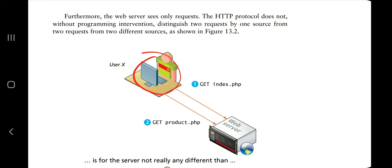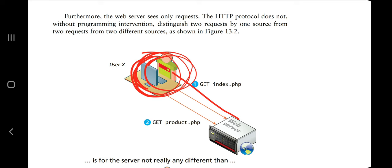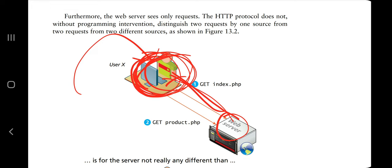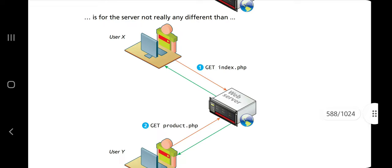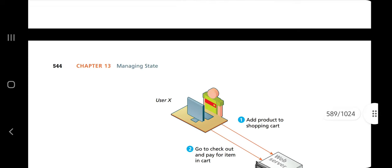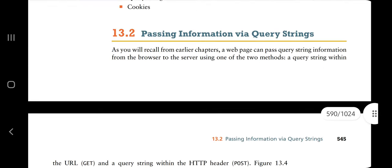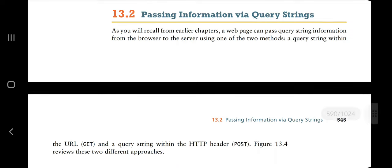How does that get solved? By using cookies. Cookies will store specific information regarding the user — what this user has done specifically will be stored. So next time this user searches, the browser knows which person it is because of the information stored in cookies. That's the problem of state and how cookies overcome it by storing the user's information.